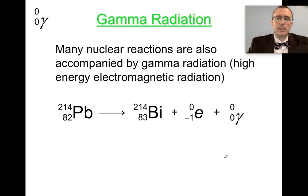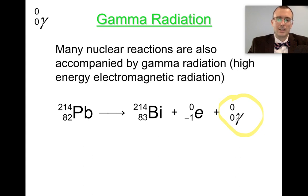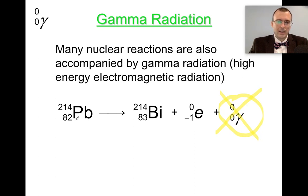Gamma radiation is not just a thing by itself — it typically occurs along with other sorts of nuclear decay. It can occur with alpha decay, beta decay, or other things like positron emission. Gamma is written as zero-zero because it's simply electromagnetic radiation — a photon with zero rest mass and zero charge. Typically we don't even bother writing it down; you just need to recognize that sometimes gamma radiation also occurs. For example, lead-214 gives off a beta particle and also gives off gamma radiation as it converts into bismuth-214.